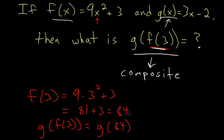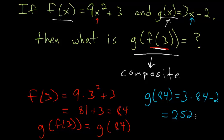And then to evaluate g of 84, we'll just put 84 in anywhere we see an x in g of x. And so 3 times 84 minus 2. 3 times 84 would be 3 times 80 is 240, plus 3 times 4 is 12. So 252 minus 2, and so our final answer is 250.